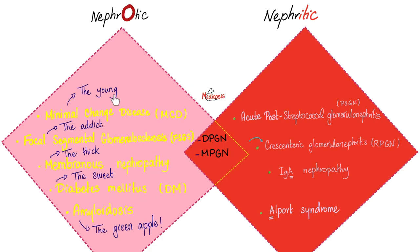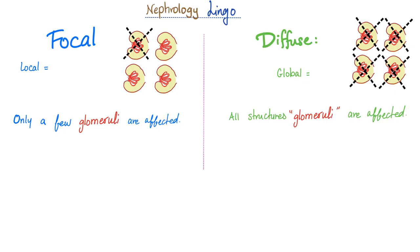Some mnemonics: minimal change disease is the young, focal segmental glomerulosclerosis is the addict, membranous nephropathy is the thick, diabetic nephropathy is the sweet, and amyloidosis is the green apple. Today we're talking about focal segmental — and what kind of addict? Heroin.